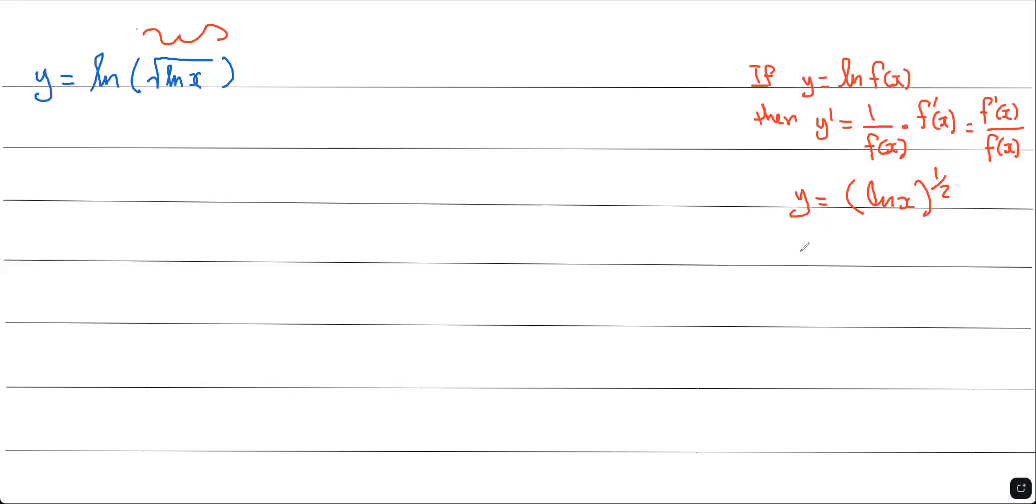Now, let's find y prime. This is basically power rule and chain rule at the same time. We bring the half down: ln x to the power of negative 1/2, times the derivative of the inside. The derivative of ln x is just 1 over x. Now, let's simplify this further.